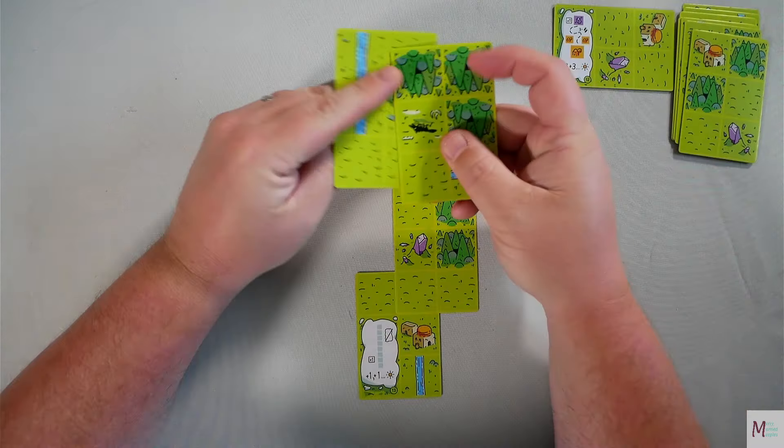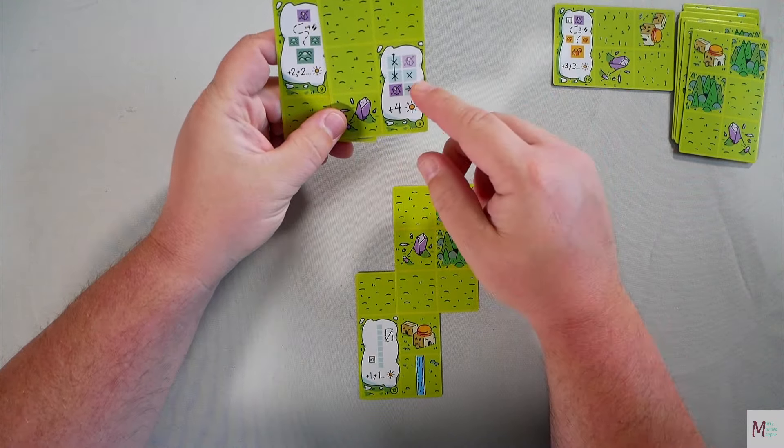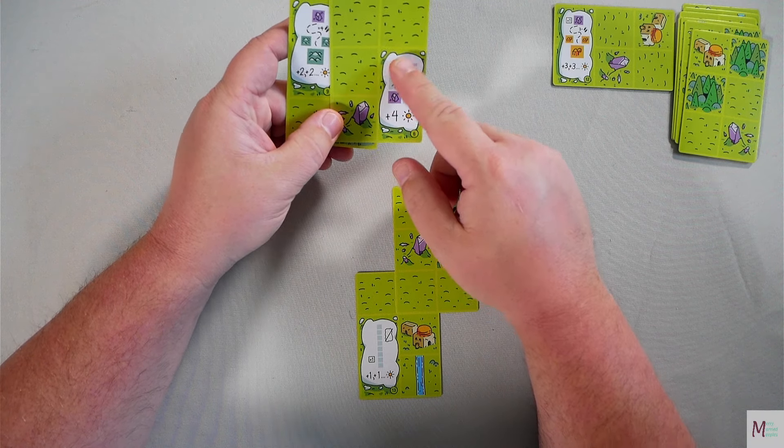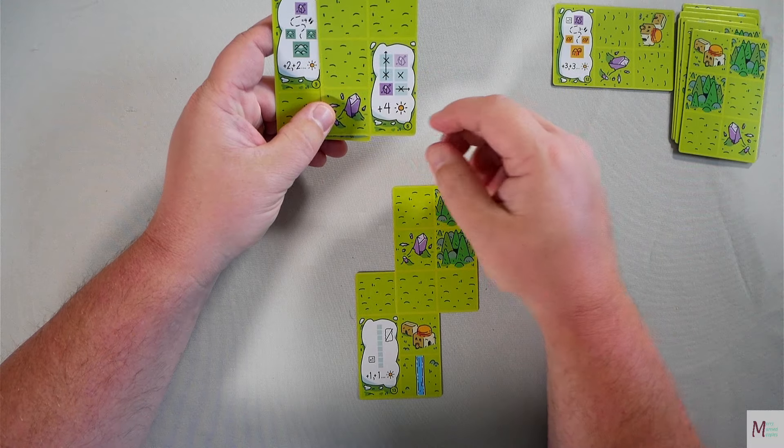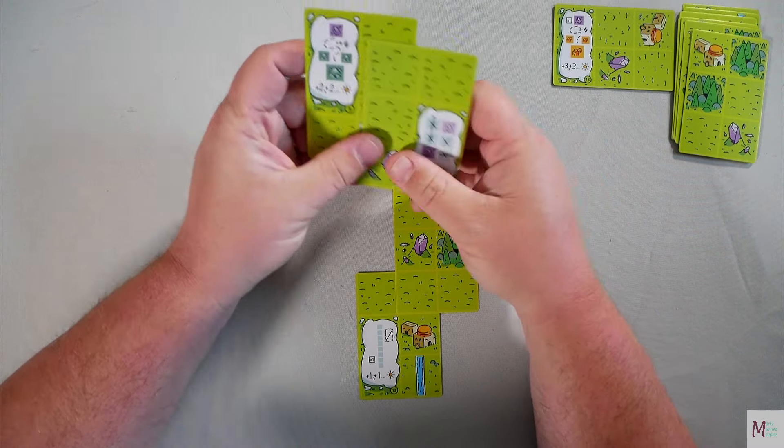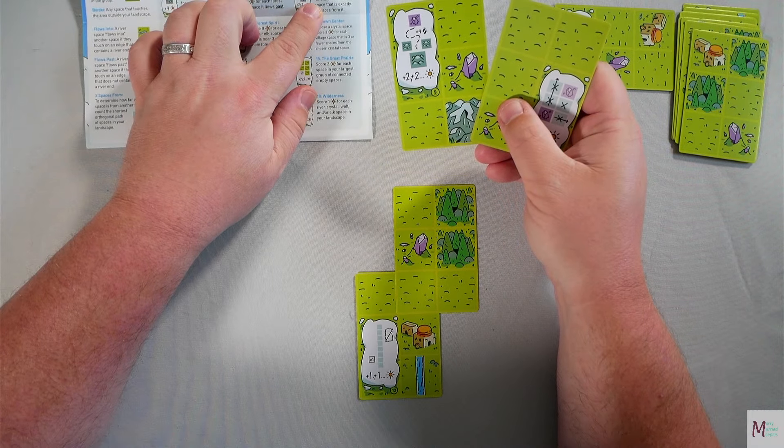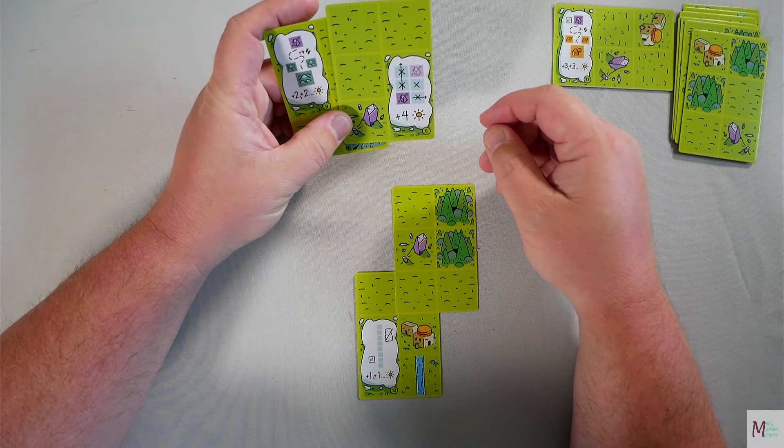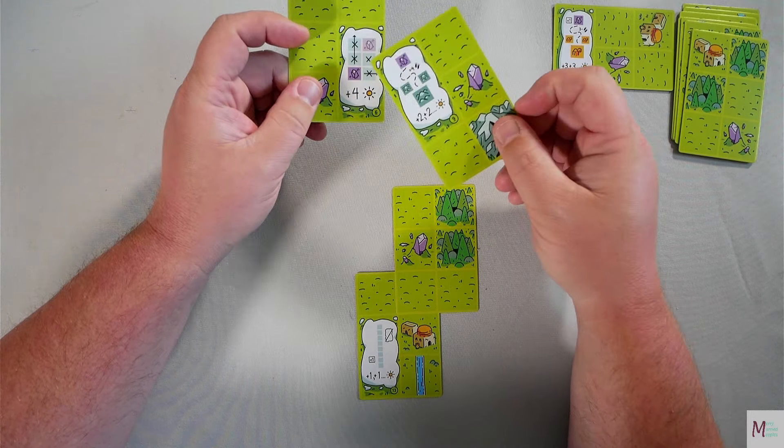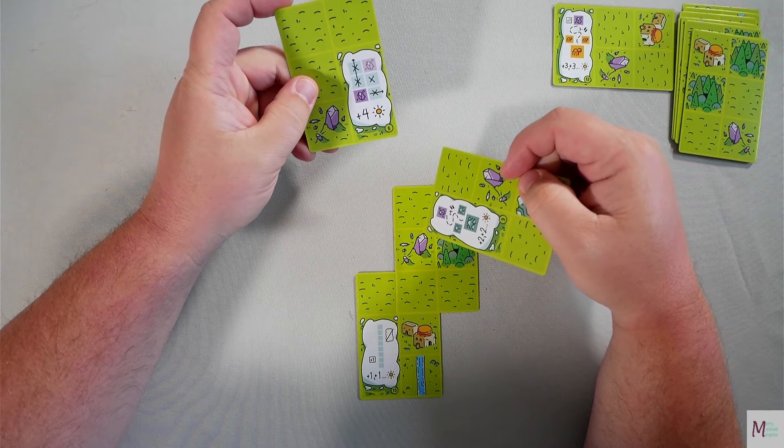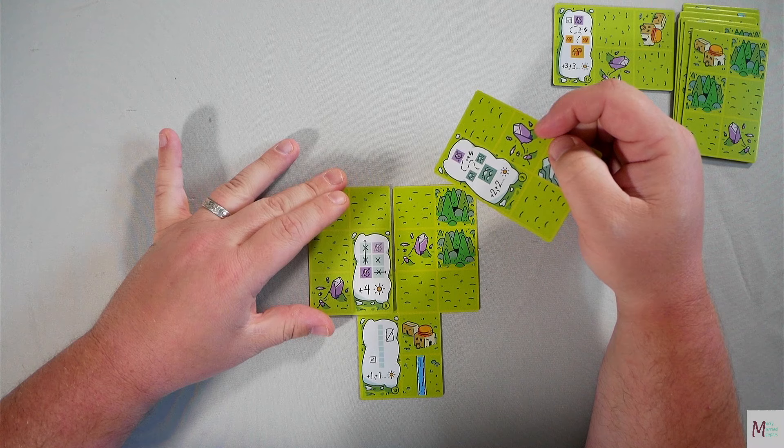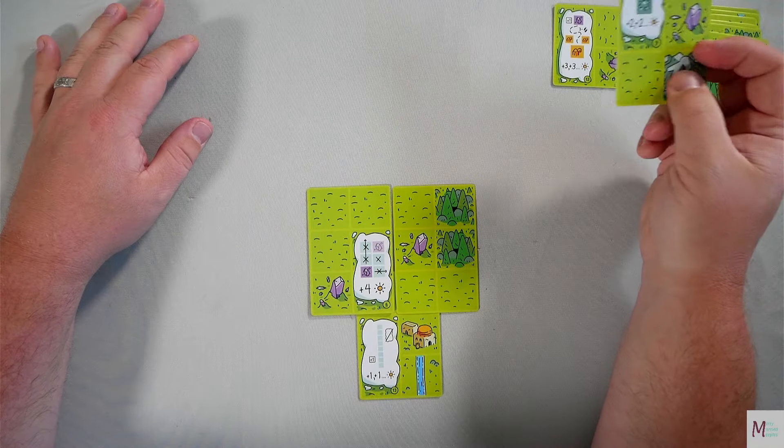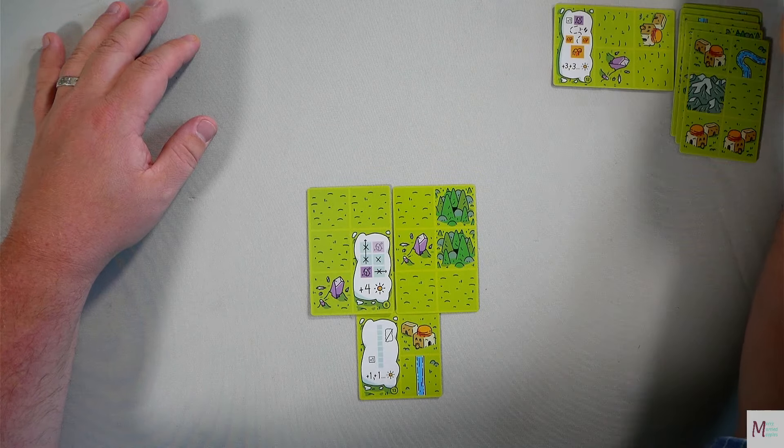We grab our two. Neither one of these has villages in it, so probably not going to necessarily care about that as much. This is going to be four points for every crystal that is in a row or column that doesn't have a crystal and doesn't have a crystal orthogonally or diagonally adjacent to it. Number nine is each of your crystal spaces scores two for each mountain space that is exactly four spaces from it. I think I'm going to grab that scoring condition because I already have a crystal. I can technically go right there. So this is in a different row or column, they're not next to each other, so right now that is four points for each of those.